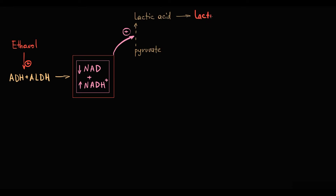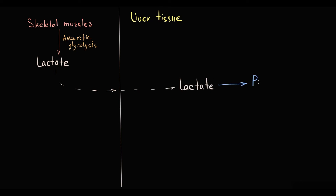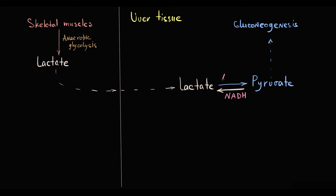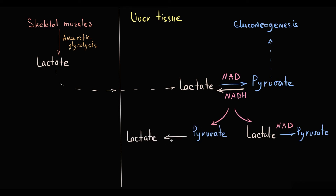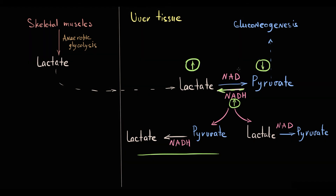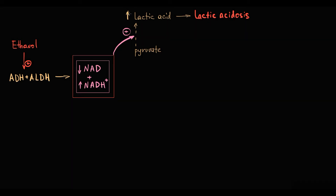To explain lactic acidosis: skeletal muscles during anaerobic work produce lactate via anaerobic glycolysis, which is taken up by the liver — this is the well-known Cori cycle, and the liver is a major consumer of lactate because it converts lactate to pyruvate for use in gluconeogenesis. However, this conversion can occur in both directions, and the determining factor is the NADH/NAD+ ratio. Conversion of lactate to pyruvate requires NAD+, while conversion of pyruvate to lactate requires NADH. The higher the NAD+ concentration, the more pyruvate is formed; the higher the NADH concentration, the more lactate is formed. With alcohol consumption, the increased NADH/NAD+ ratio shifts this reaction toward lactate production and decreases pyruvate, which is a substrate for gluconeogenesis.